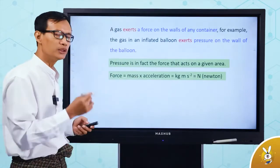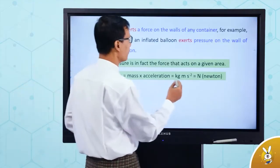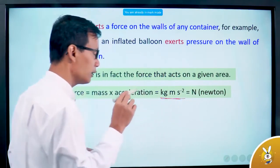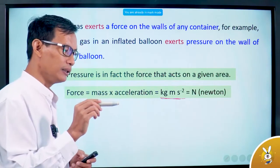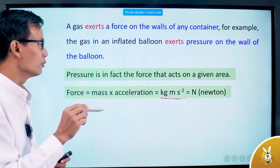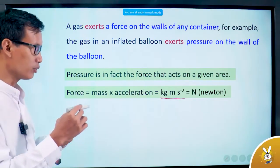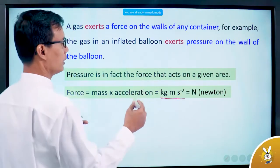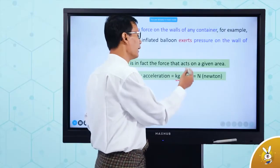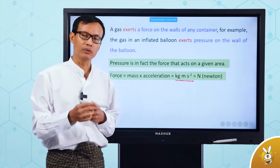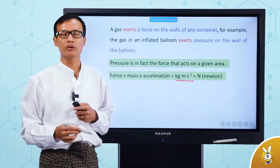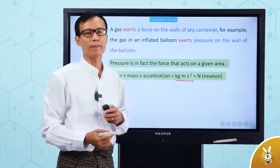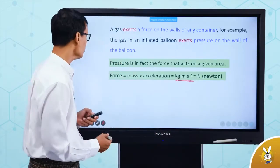Acceleration — to get your unit, you need to check out. Force your unit: kilogram times meter divided by second squared. To get kilogram meter per second squared — that's why you can use Newton. Kilogram times meter per second squared equals Newton. That's the force. Now, the pressure — when you use the pressure, the pressure is force divided by area.